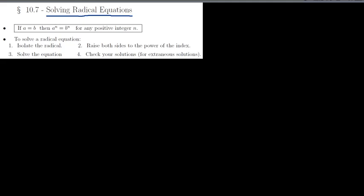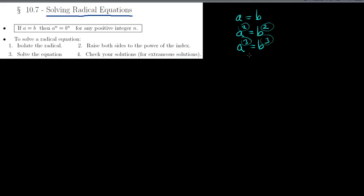The primary concept we're going to use is: when you have two things that are equal — say a and b — if they're equal, you can raise both sides to any power you want. You can square the left as long as you square the right, or cube both sides. Whatever positive integer exponent you choose, you apply it to both sides.